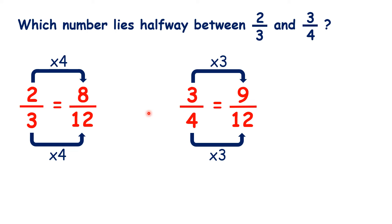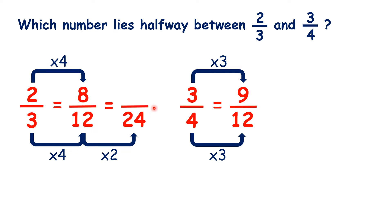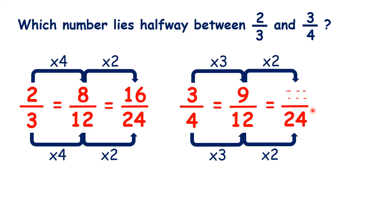So let's find a different equivalent fraction. The next common multiple of 3 and 4 is 24, so 2 thirds is the same as 16 twenty-fourths, and 3 quarters is the same as 18 twenty-fourths. Does this help us? It does, because the number halfway between 16 and 18 is 17, so our answer is 17 twenty-fourths.